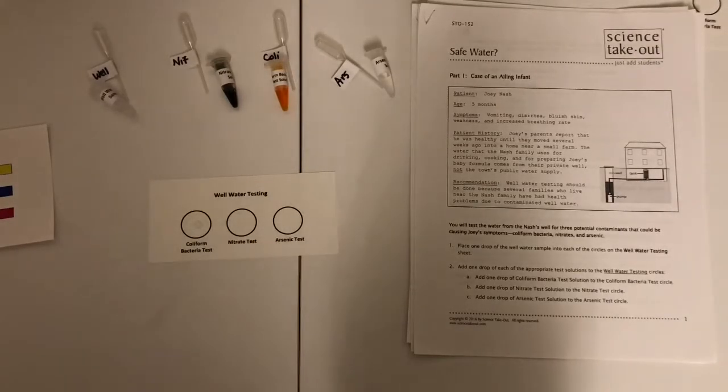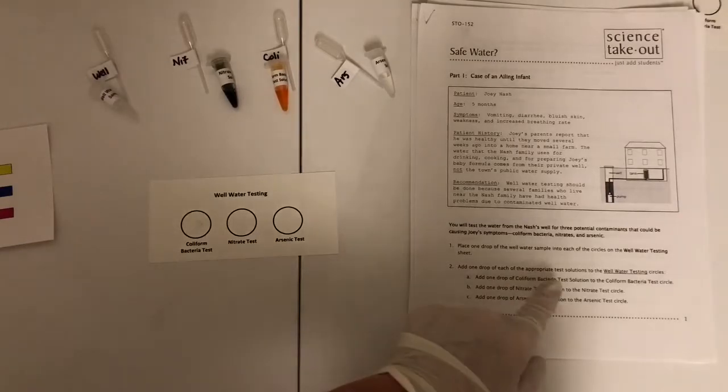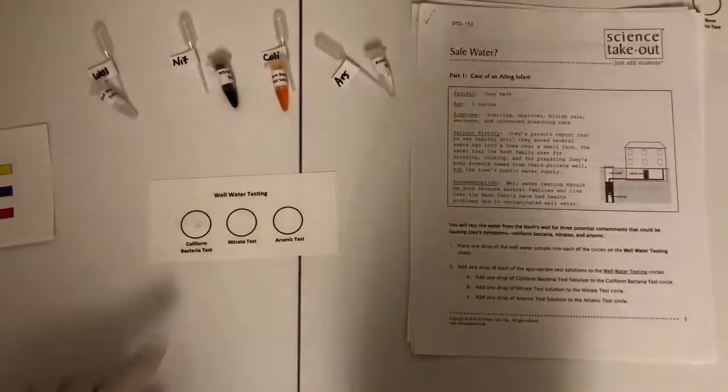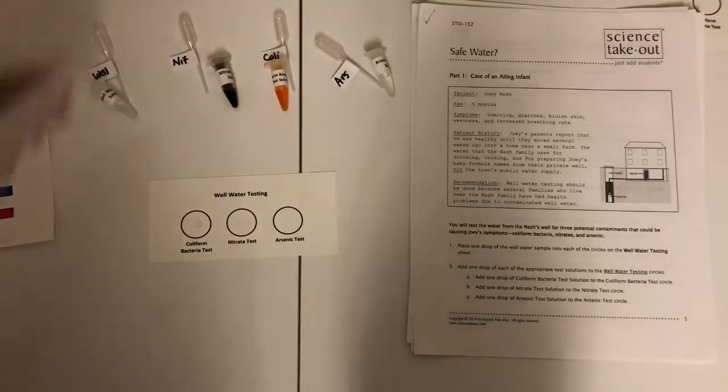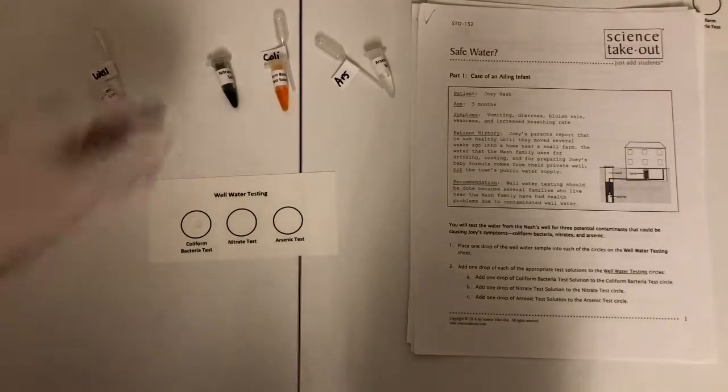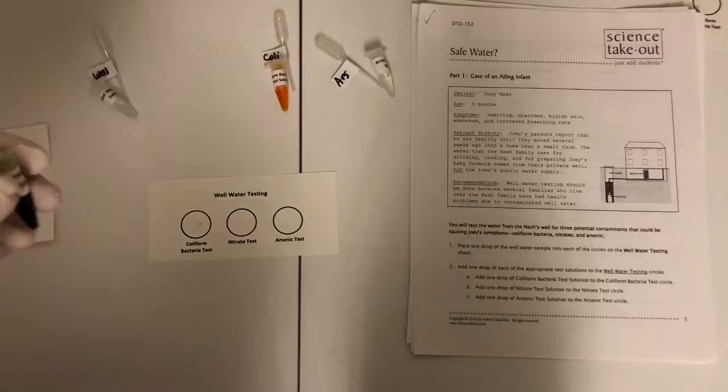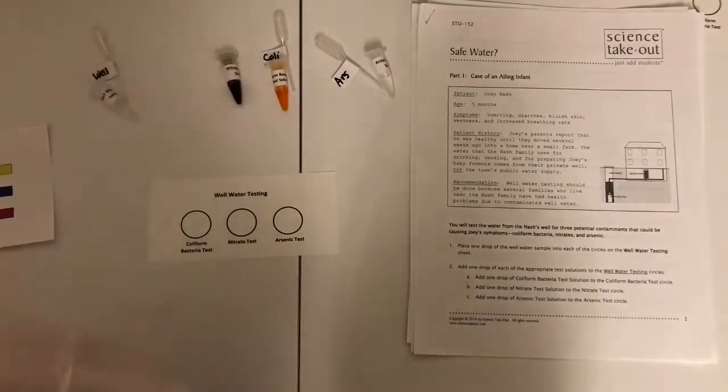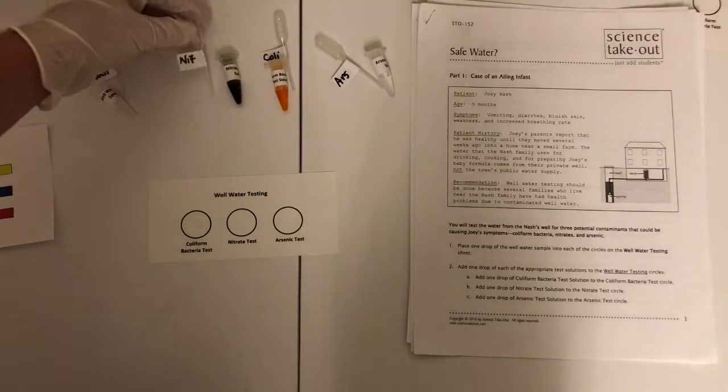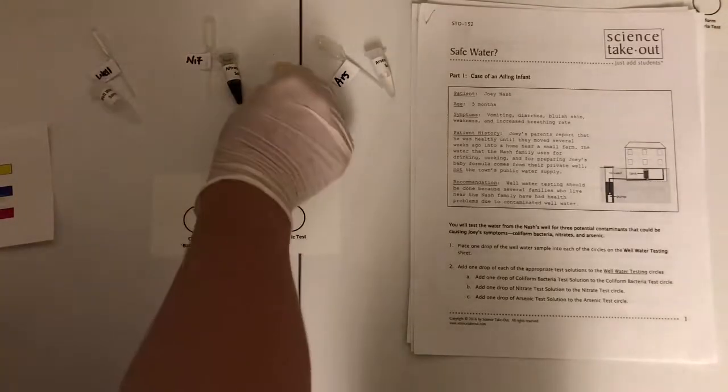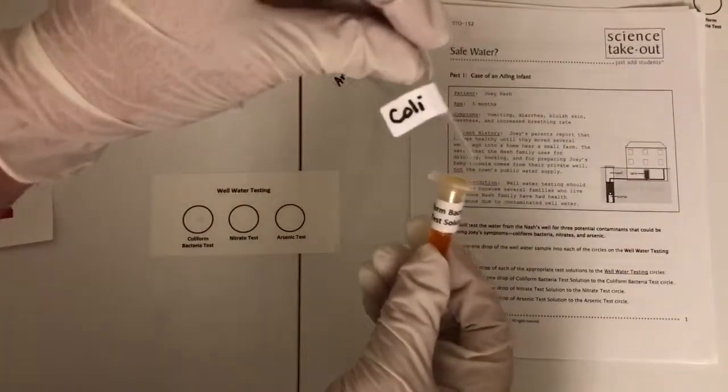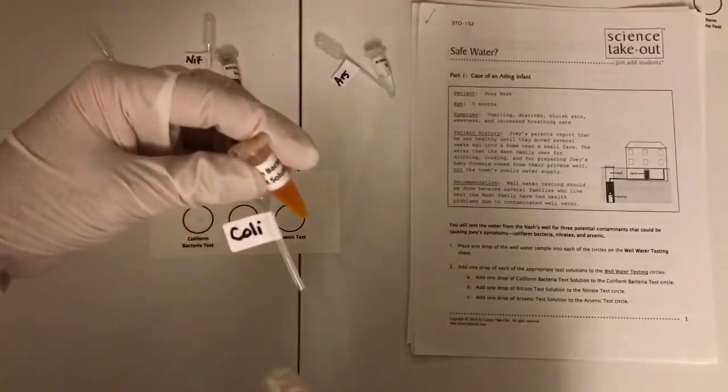Once you've done that with each of them, then you're going to add one drop of each of the appropriate test solutions. So when you drop this dropper solution, it says start with coliform. So I put it on the coliform dot, so I want to actually grab the coliform solution test and its matching pipette. But when I do that...